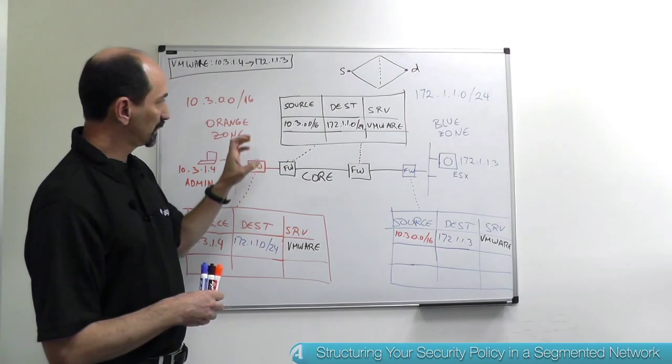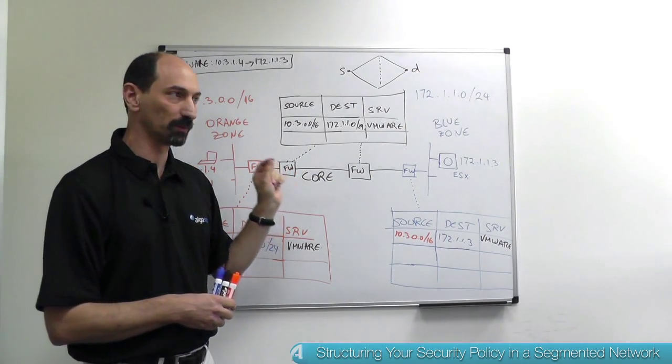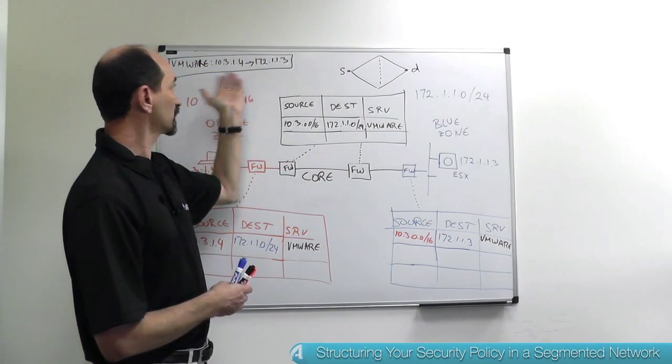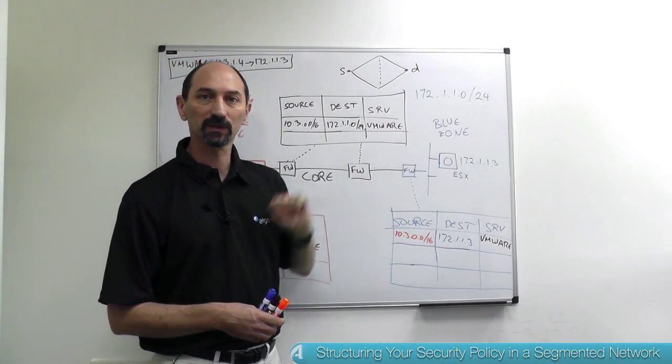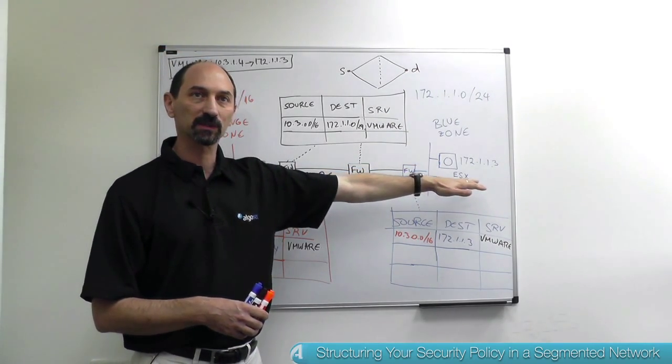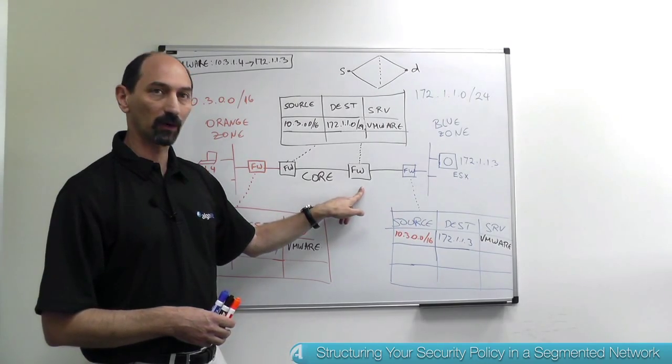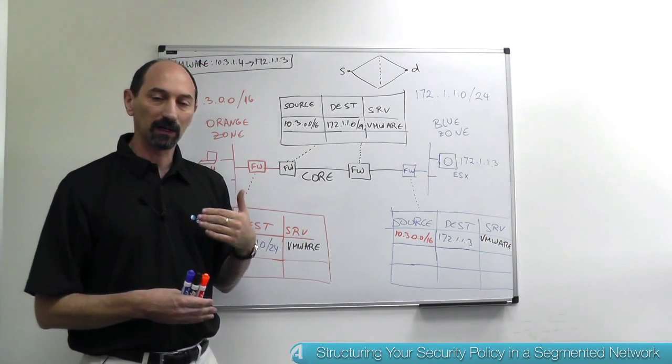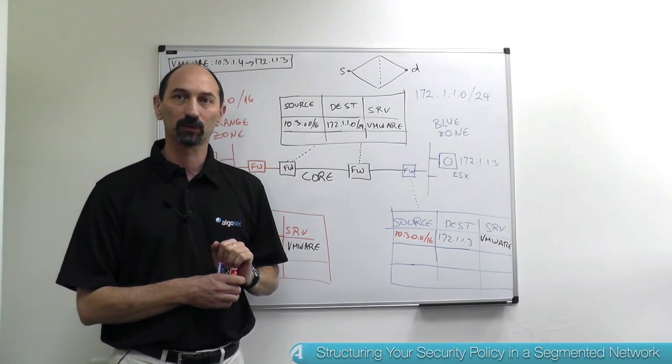But what I've done by introducing wider objects in the source and the destination in the intermediate steps and just having one side of the rule being very specific at the points is that if in the upcoming weeks you receive additional change requests that are variations of this one, so maybe from that same administration station the administrators would need to get to other servers in the blue zone or maybe there are other administration workstations that need to get to that same system, in those upcoming change requests should they occur you might not need to touch the firewalls in the core at all and maybe you'll just need to touch one firewall either near the destination or near the source. So you're future proofing your policy and saving yourself potential work in upcoming change requests without giving up any security for the immediate change requests that you have to deal with right now.